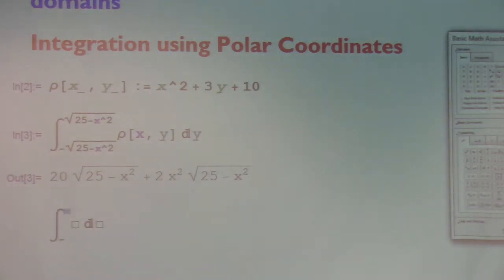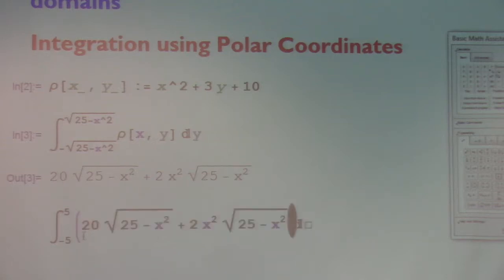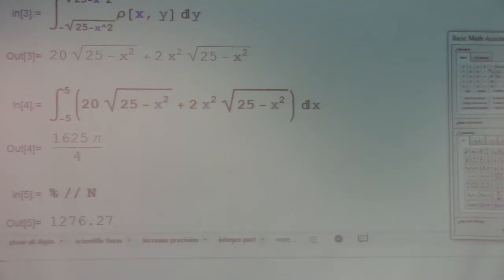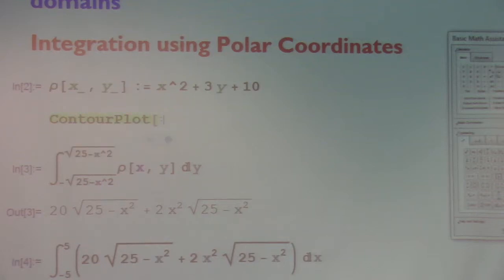You'd then integrate that function from −5 to 5. Using Mathematica, the value of the integral is about 1276 grams. You should think about whether that makes sense — try to make a habit of sanity-checking your answers.